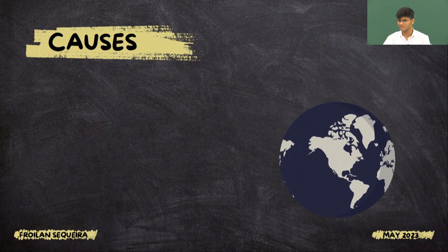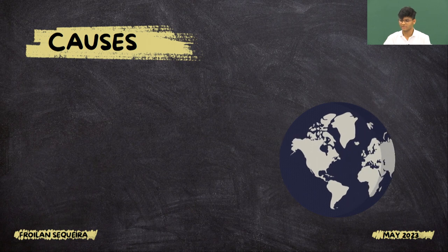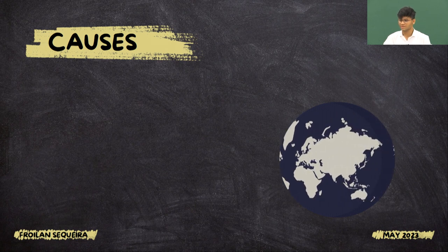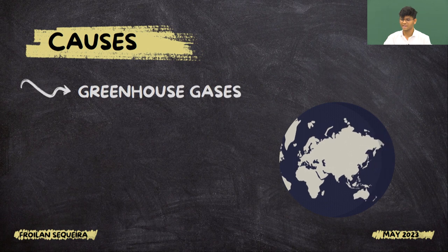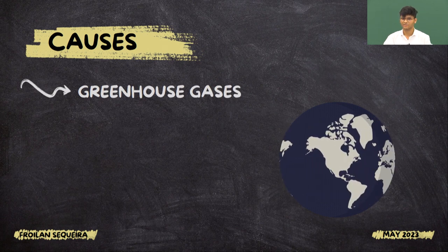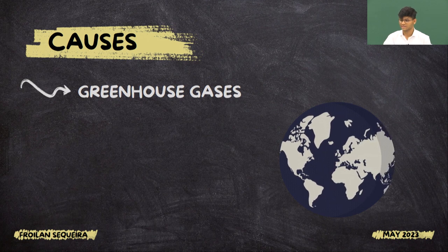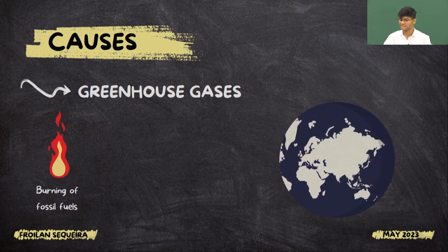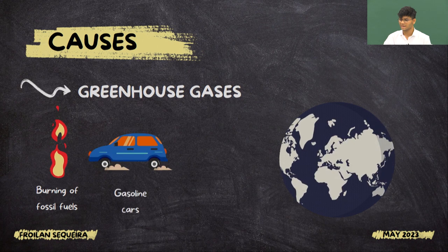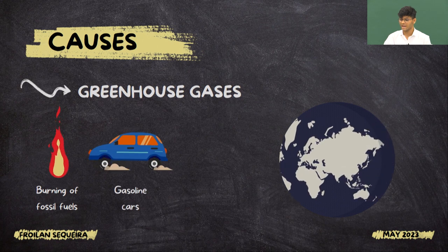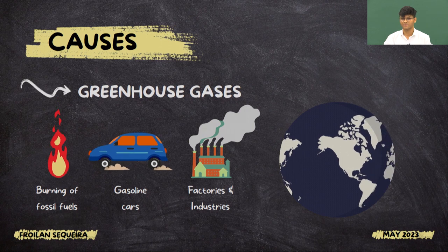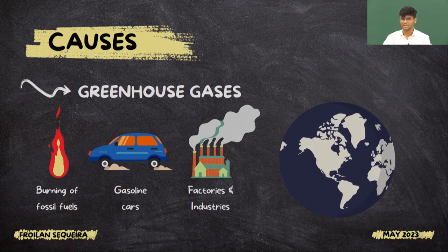The main factors responsible for the change in climate are called greenhouse gases. What generates greenhouse gases? Human activities such as burning of fossil fuels, driving gasoline cars, and the increase in industries and factories — they all generate greenhouse gases.